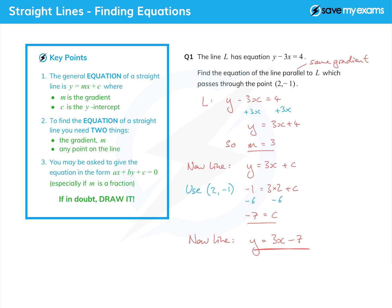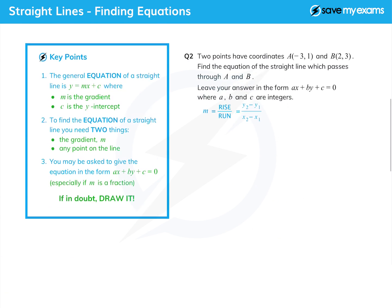Now sometimes we have to work a little harder. Let's look at question 2. This time we're given two points, A and B, so that more than fulfills any point on the line. And we're asked to find the equation of the straight line which passes through A and B, so we're not given the gradient yet, so we're going to have to find that. And we're asked to leave our answer, as suggested in the blue box, in the form ax plus by plus c equals zero.